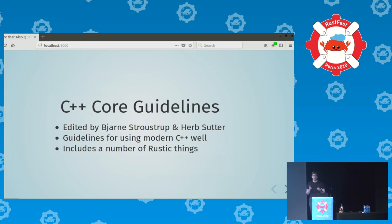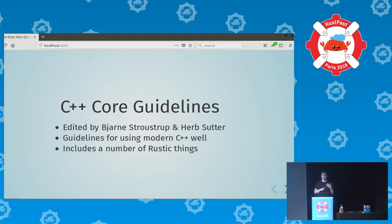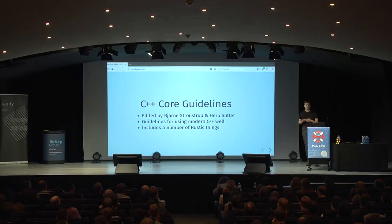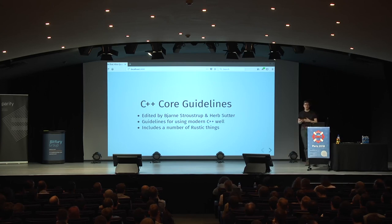Then we get to the C++ part. How do we know what good modern C++ is? We want guidelines for using modern C++ well. There is a document called C++ Core Guidelines that answers this. It's edited by Bjarne Stroustrup, the creator of C++, and Herb Sutter, the convener of the C++ standards committee, so we'll take it as authoritative.